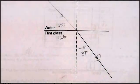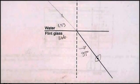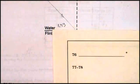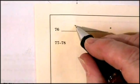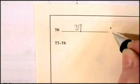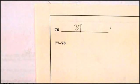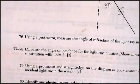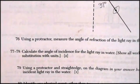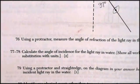So I'm measuring 37 degrees. So using a protractor, measure the angle of refraction of the light ray in the flint glass. Okay. So 76 would be, let me say that was 37 degrees. And the unit degree is already there for you. Alright. Now what they want you to do is to calculate the angle of incidence. Okay. That's good. We got everything we need.